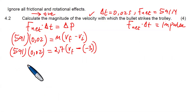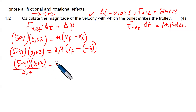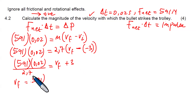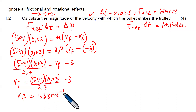Using our calculators: 591 × 0.02 divided by 2.7 minus (negative 3). Working through this, the final velocity of the trolley is 1.38 meters per second. So we have the final velocity of the trolley equals 1.38 m/s.